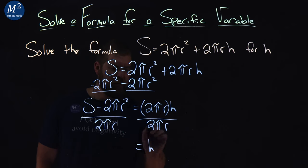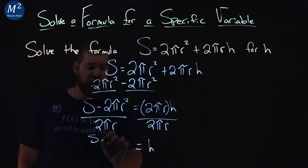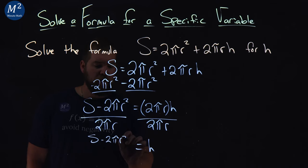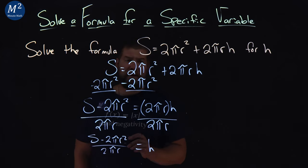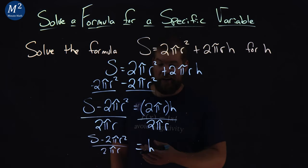Now we have H by itself, and we have S minus 2πR² over 2πR. This, in fact, can't simplify anymore.